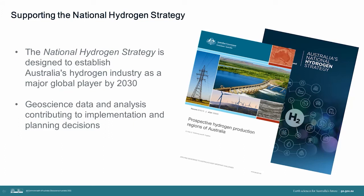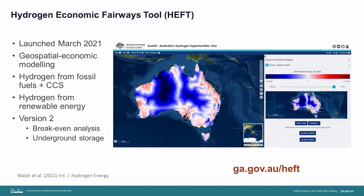Our hydrogen economic fairways tool, HEFT, released in 2021, is built within the framework of Monash University's Blue Cap Code and provides a coupled geospatial economic analysis. This code was originally developed as a mineral prospectivity tool, but it was clear that the same approach could be applied to hydrogen developments, linking infrastructure with resources. It considers factors like the capital and operating costs of a hydrogen plant, distance to port and to water resources, and the renewable energy generation capacity at different locations and for different sized plants across Australia. The overall goal is to generate a map of net present value of hydrogen production at any location across Australia for a selected target hydrogen price. We released an updated version in 2022 that now includes the break-even analysis and underground hydrogen storage.